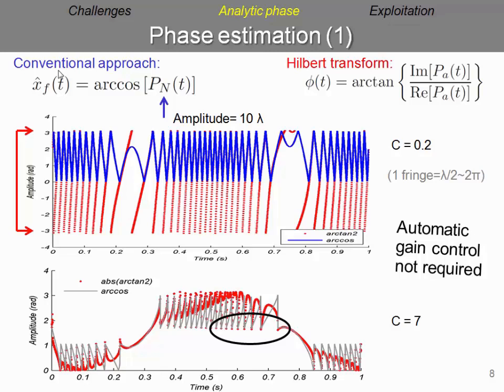We also observe that by using the Hilbert transform, we can observe the different phase discontinuities that are used to detect the different fringes of a signal to reconstruct or extract more information.